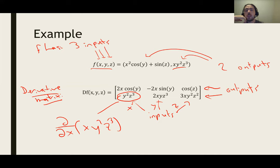Similarly, this one over here is the z derivative of the first output because it's in row one, column three. By putting all of those together into this derivative matrix, we get the matrix that's going to play a role in our linear approximation.